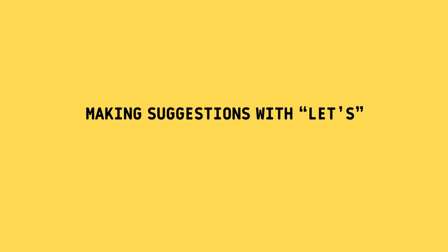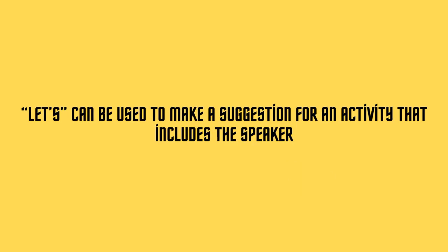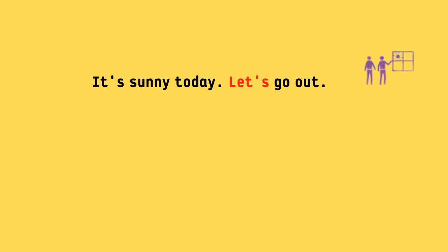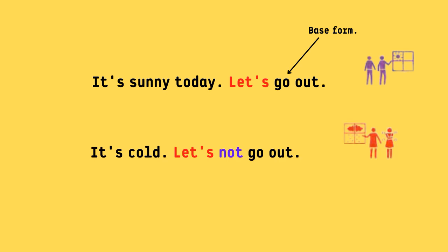Making suggestions with Let's. Let's can be used to make a suggestion for an activity that includes the speaker. For example: It's sunny today — Let's go out. The base form of the verb is used. It's cold — Let's not go out. Not goes after Let's to form the negative.